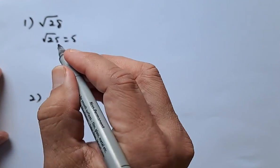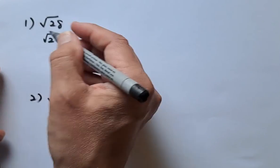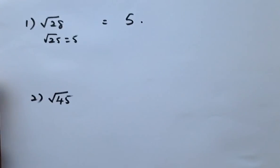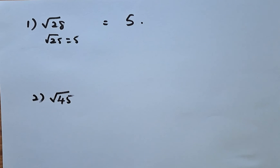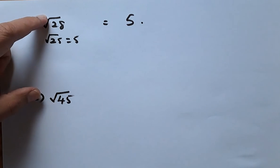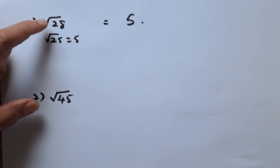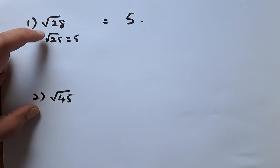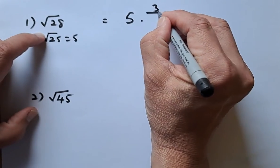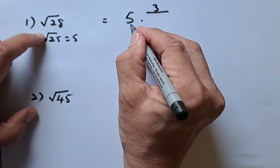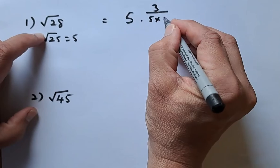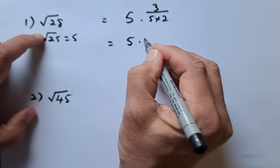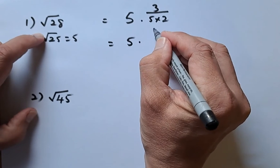The technique you need to remember is that 28 minus 25—the original number minus the square number—is going to be 3, and you need to divide by double of this number, so 5 times 2. So the answer is going to be 5 point 3 over 10, which is 3. So the answer is 5 point 3.